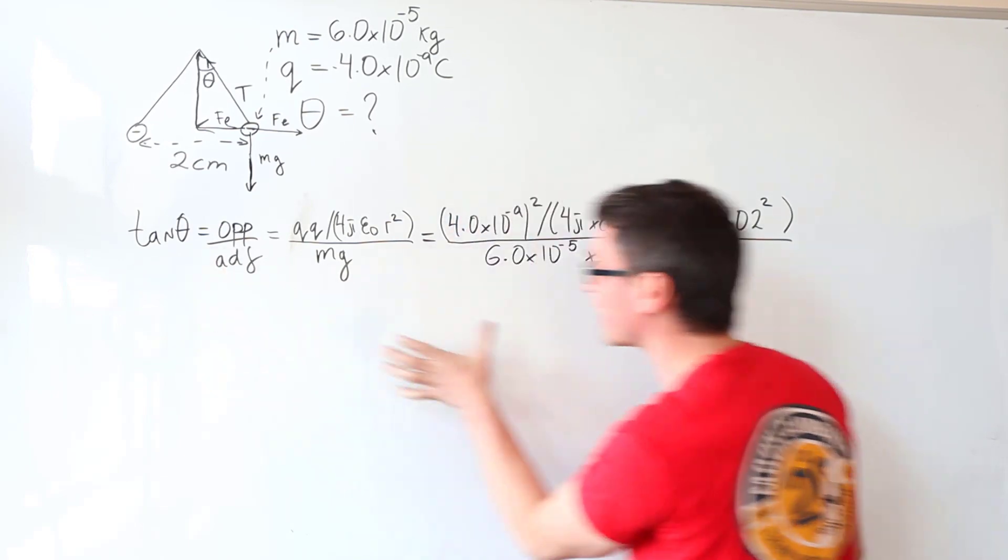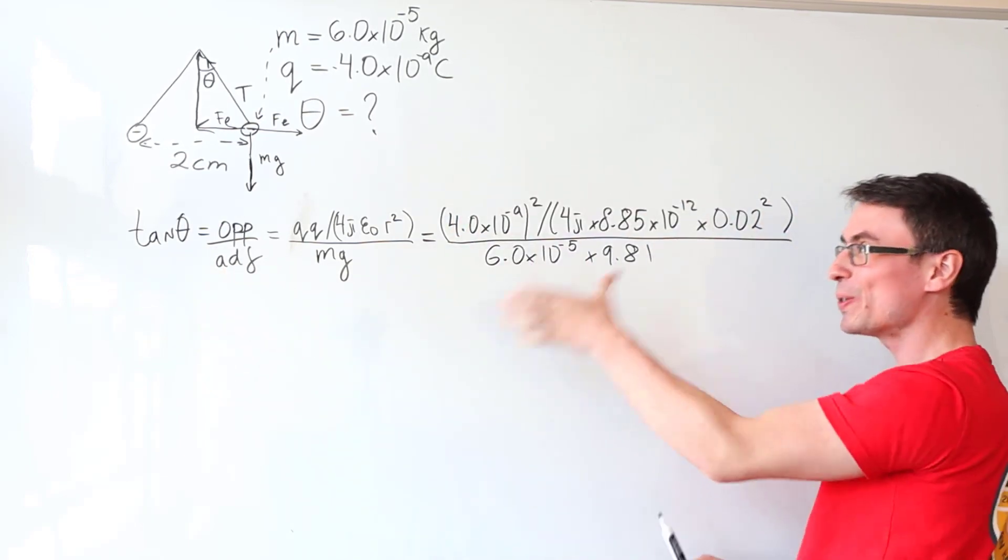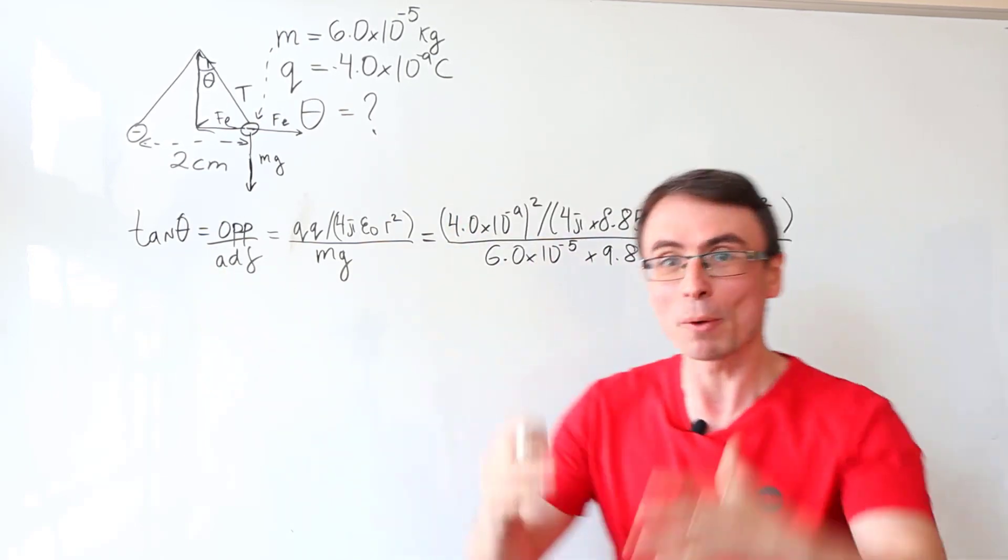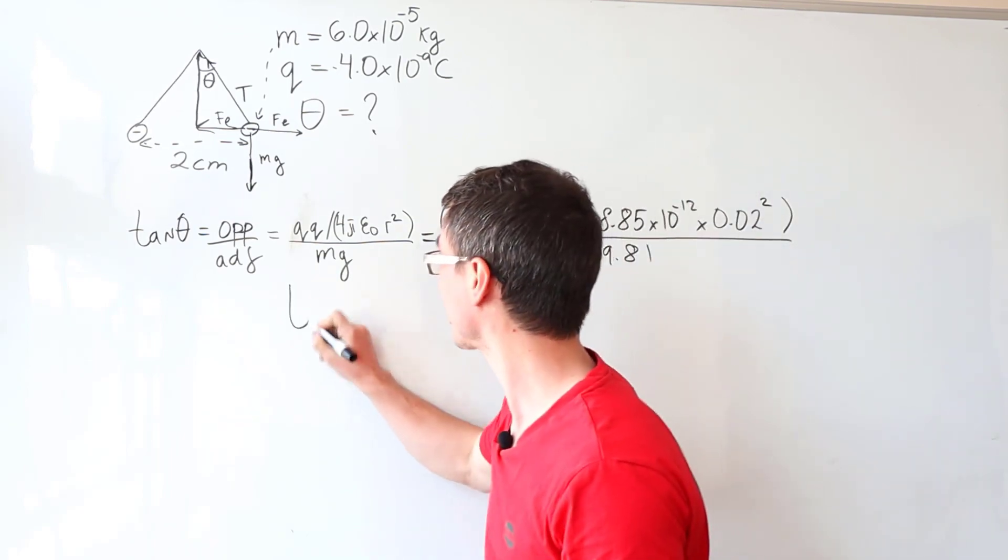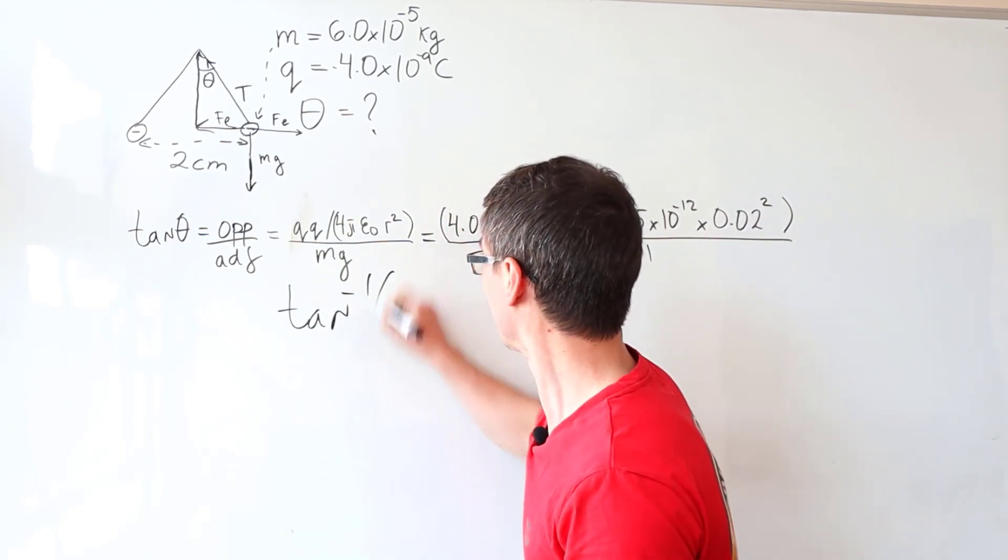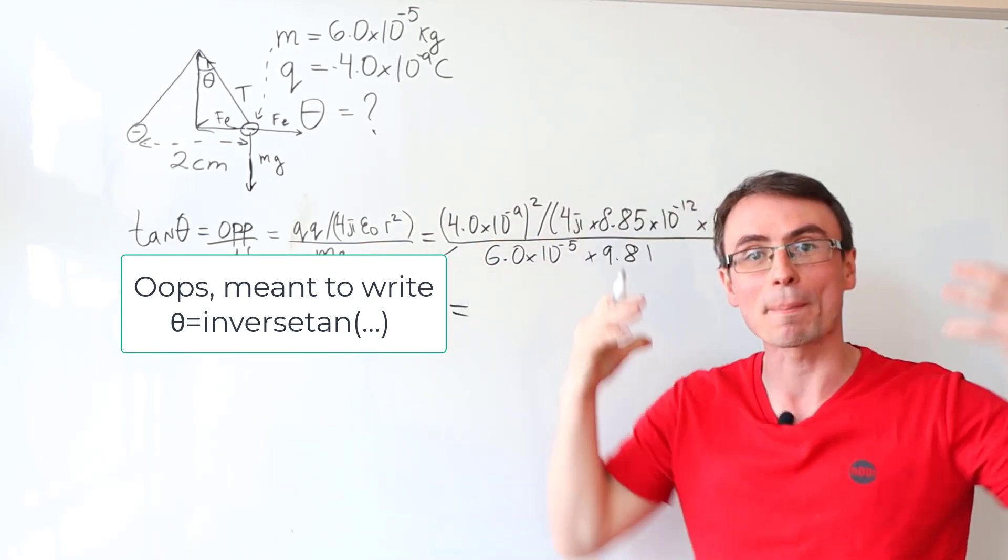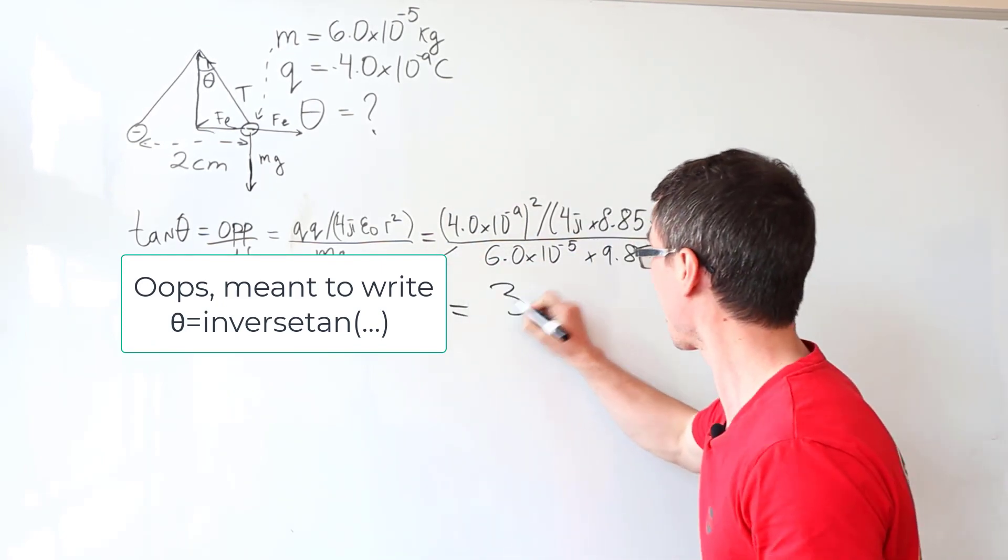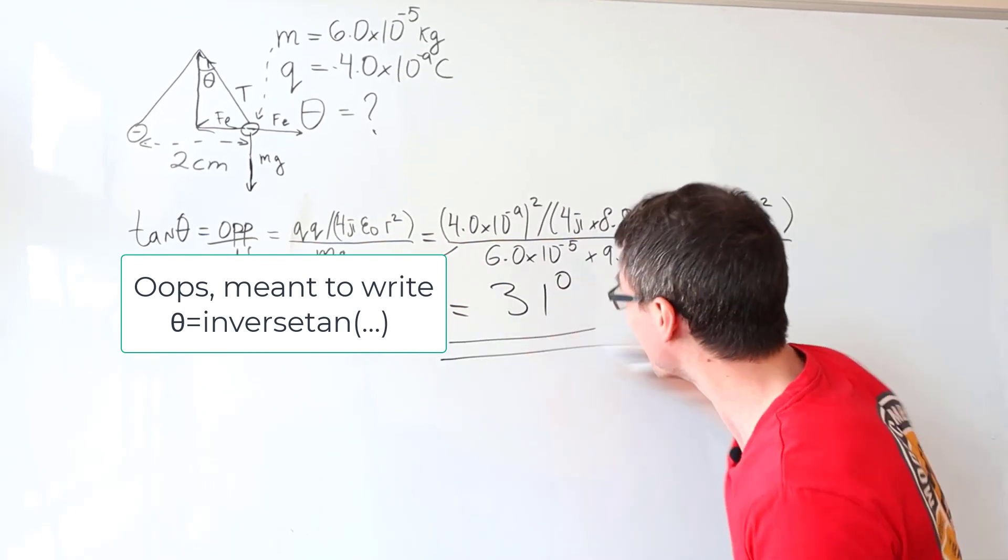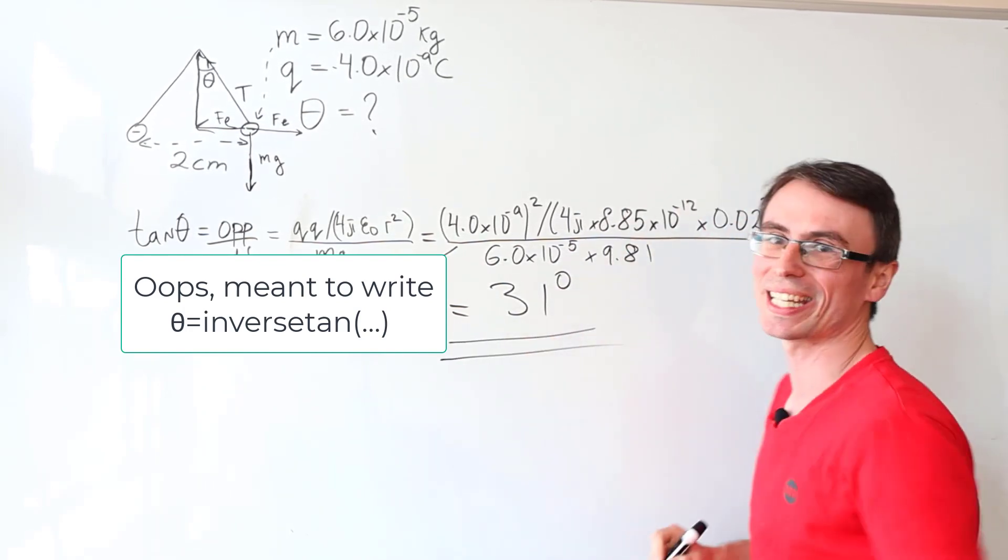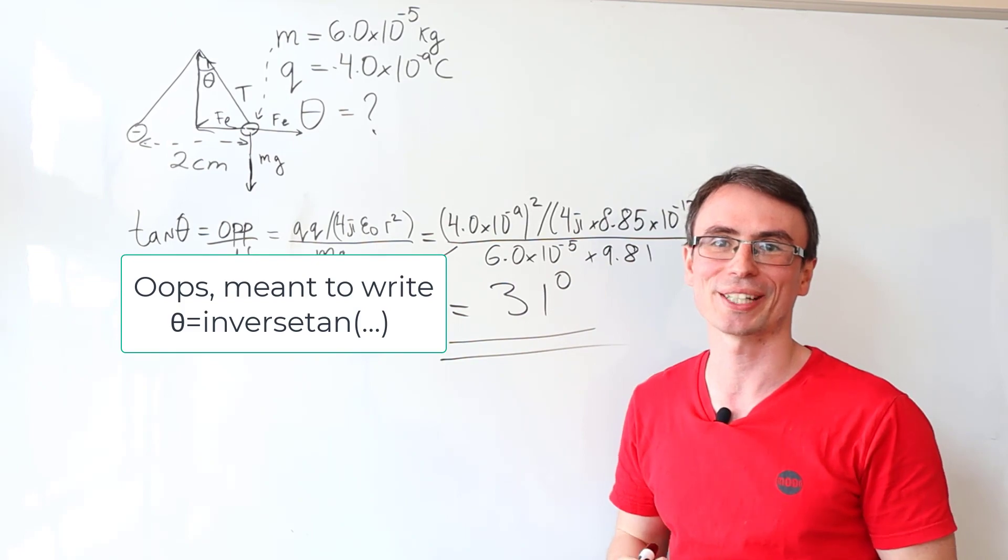Now, this here is equal to the tangent of theta. What I really need to put into my calculator is inverse tan of theta of all of this expression. And if I put this into the calculator, I am going to get approximately 31 degrees up to 2 significant figures.